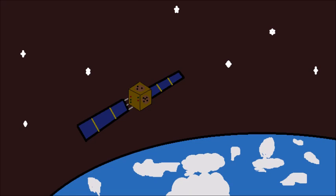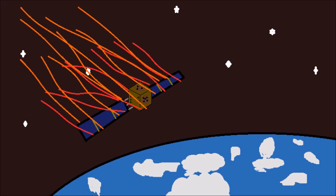Satellites float above our skies, transmitting signals all over the planet, but eventually they fall back to Earth and burn up. But why do they always burn up before reaching the surface?